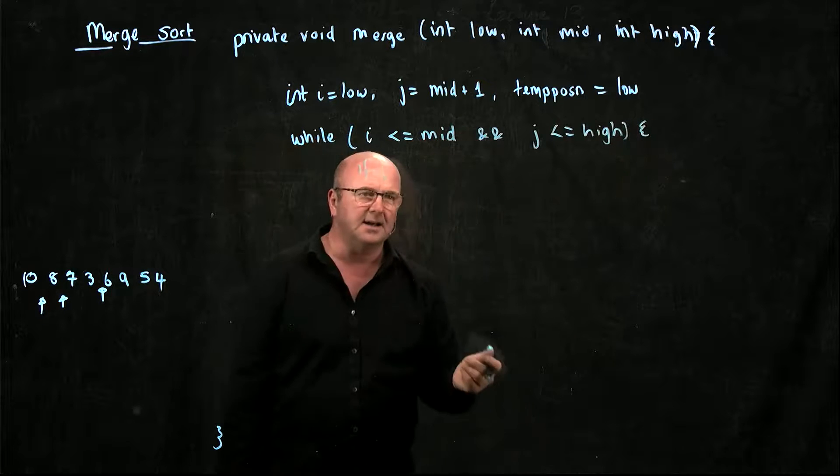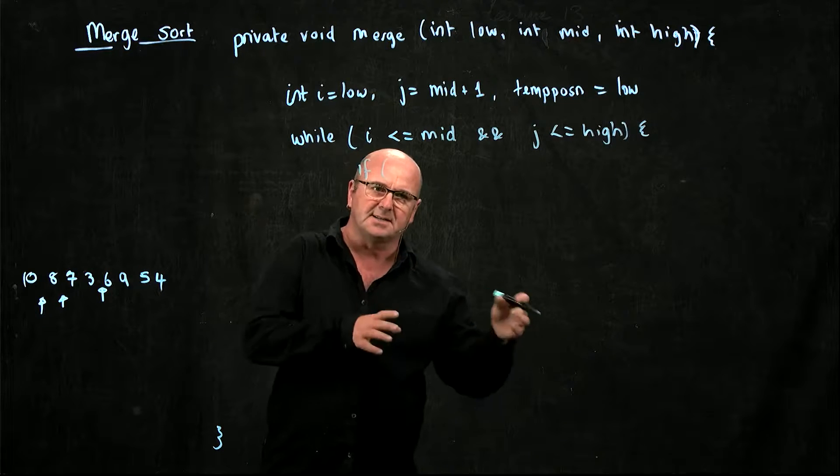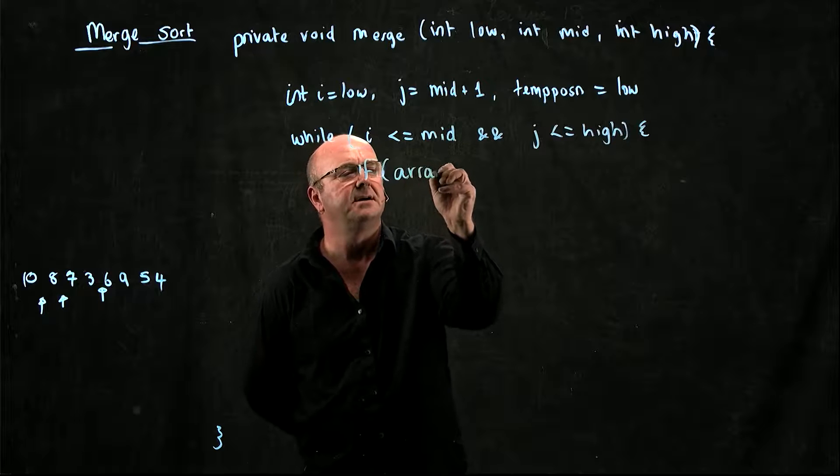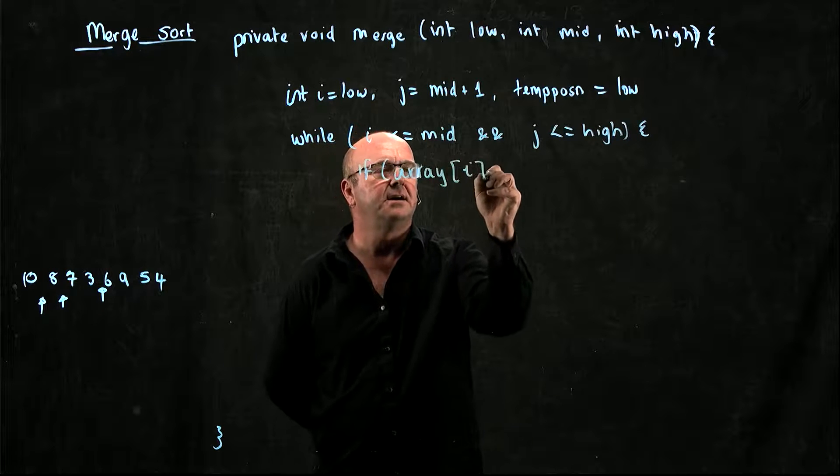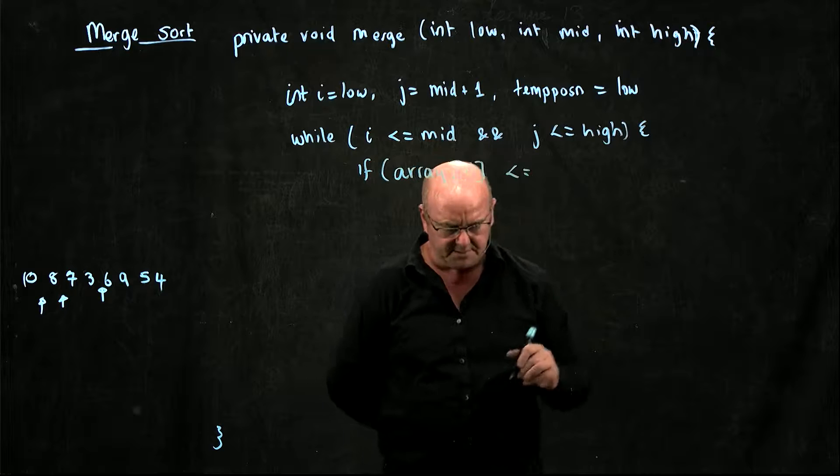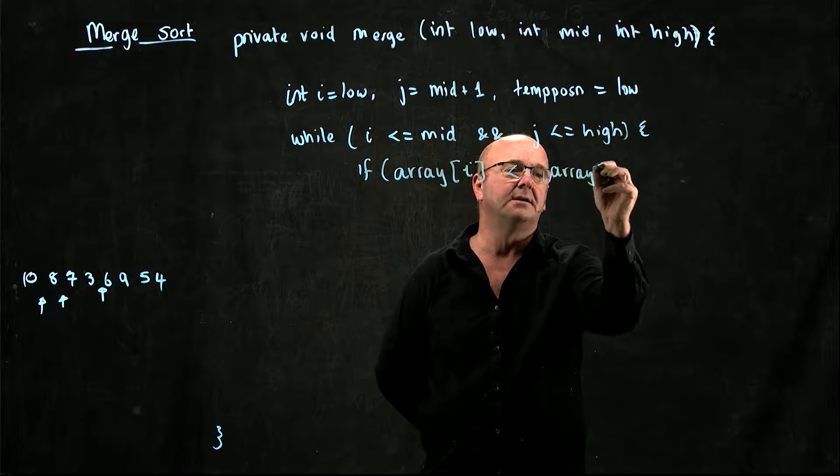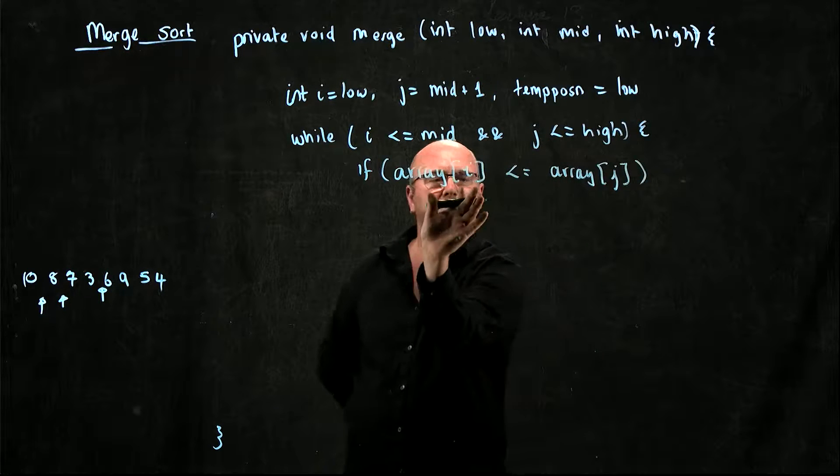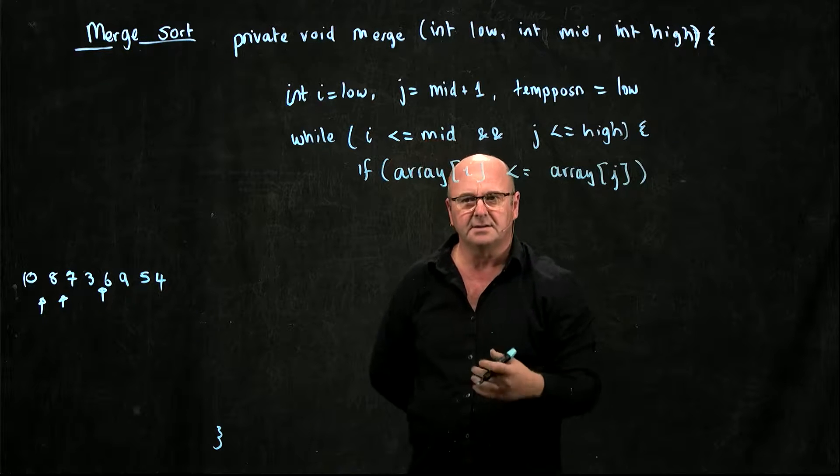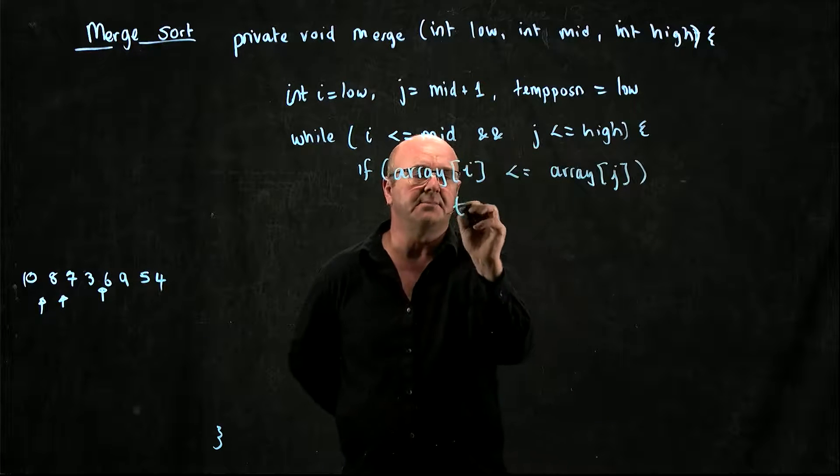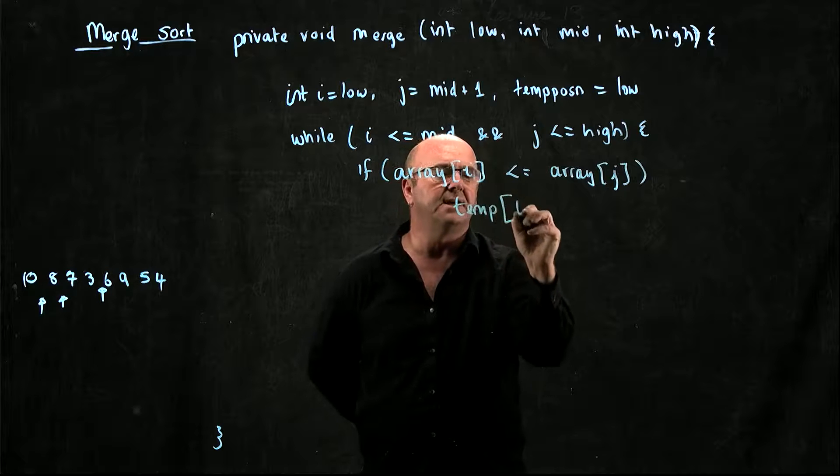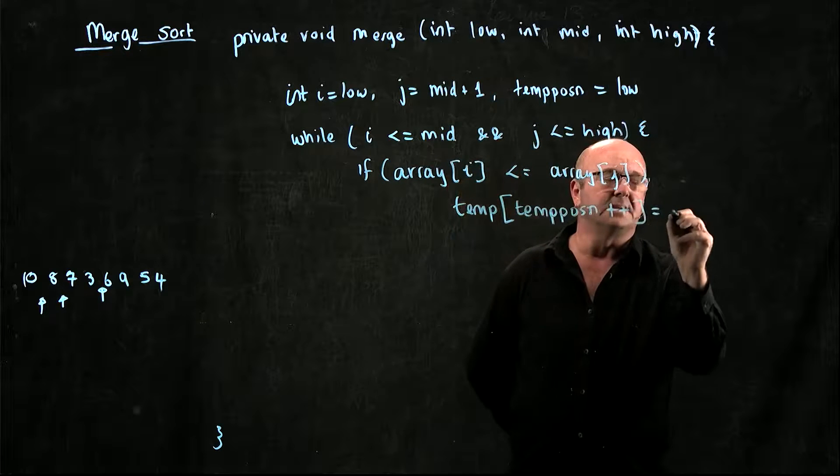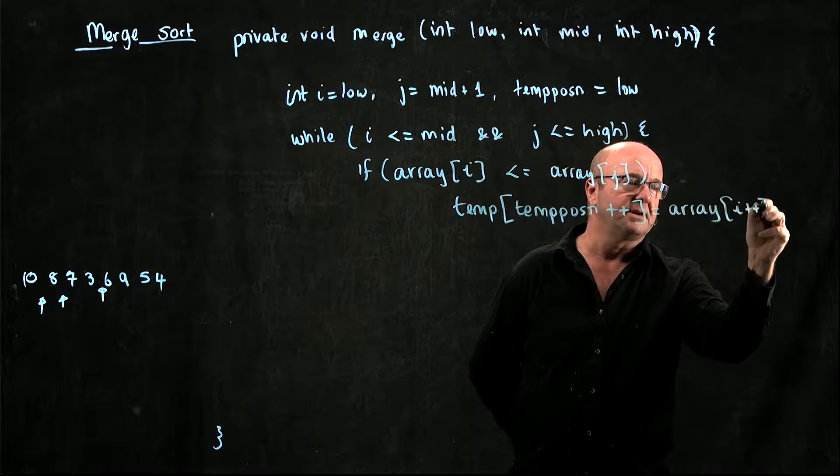So if i is less than, if the element in array at position i is less than the element in array at position j, we're going to use that. So if array[i] is less than or equal to array[j], then we're going to use the element at position array i in our temporary array. So temp array at temp position plus plus is equal to array[i] plus plus.